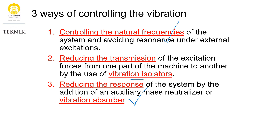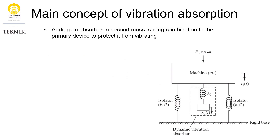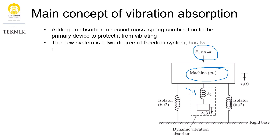What is vibration absorption all about? In principle, suppose you have mass one — a specific machine you would like to protect from vibrating. You have this external vibration, and to protect the machine you are adding an additional mass. The purpose of this additional mass is to absorb the external excitation, the external vibration, such that the vibration of the machine is at minimum.